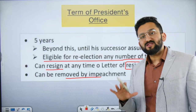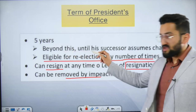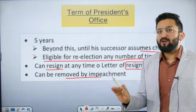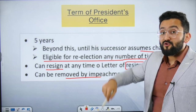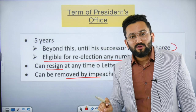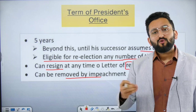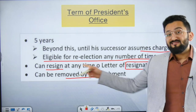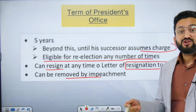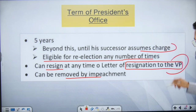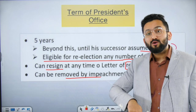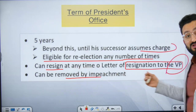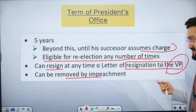The term of the President's office is five years. Beyond this, the President continues until the successor assumes charge. The President is eligible for re-election — there is no limit of two or three times; nothing as such is mentioned in our Constitution. The President can resign, and this resignation must be given to the Vice President. Please remember: oath is given by the CJI or senior-most judge of the Supreme Court, but resignation is given to the Vice President.